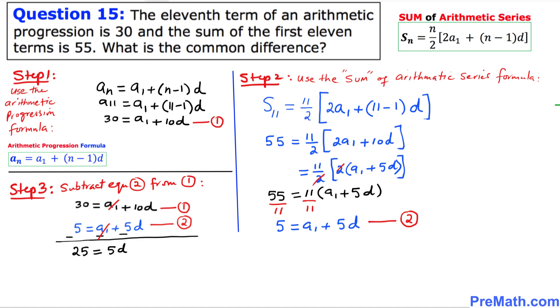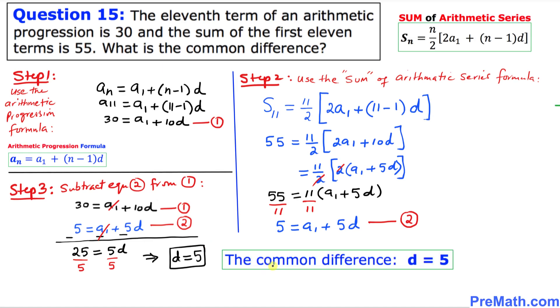We are going to divide both sides by 5 to isolate D. So finally we got D, the common difference, turns out to be positive 5. Thus our common difference is D equals 5 and that is our answer.